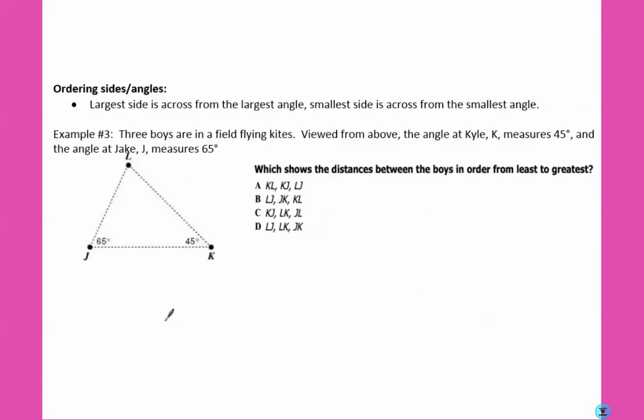Now let's look at some important things from triangles. The largest side of a triangle is always straight across from the largest angle, and the smallest side is across from the smallest angle. So in example number three, three boys are in a field flying kites. Viewed from above, the angle at Kyle, which is labeled K, is 45 degrees, and the angle at Jake J is measured 65 degrees. What shows the distance between the boys in order from least to greatest? So we need to start with the smallest first. Before we can do that, we need to figure out what this third angle is. So 180 minus 65 minus 45 leaves us with 70 degrees.